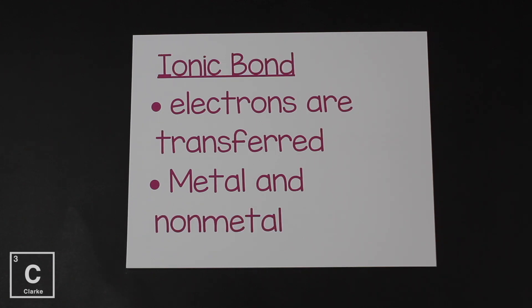An ionic bond transfers electrons. Electrons are transferred. I always like to say that it steals electrons because it's going to occur between a positive metal, a cation. That's right, metals are always going to be positive and they're always going to be cations.